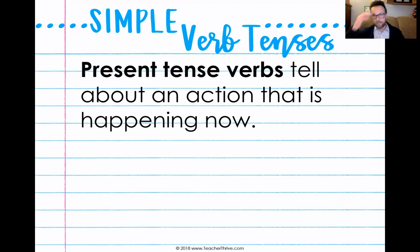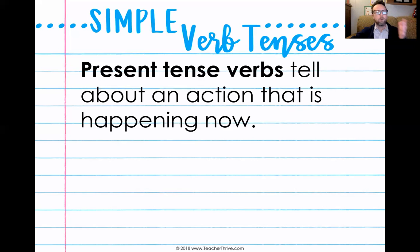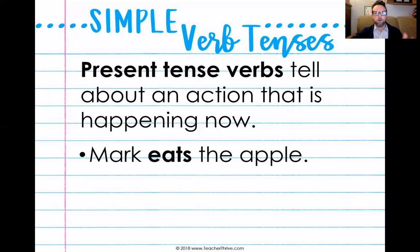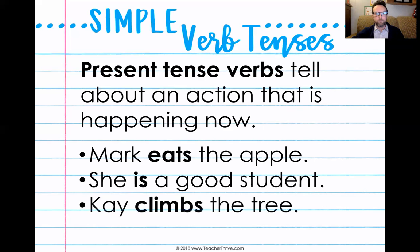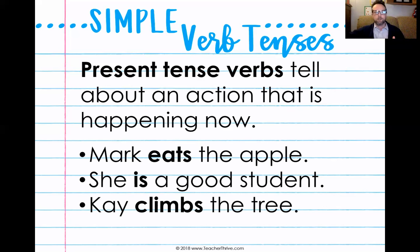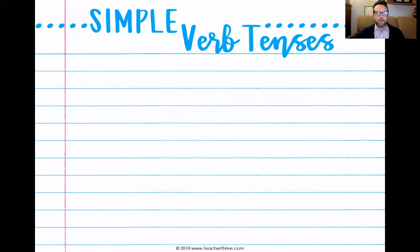The present verb tense tells about an action that is happening right now in the present. So a simple present verb would be 'Mark eats the apple' — when is Mark doing that? Right now. 'She is a good student' — when is she a good student? Right now. And 'Kay climbs the tree' shows something that is happening right now. So a simple present verb tells about an action that is happening right now.